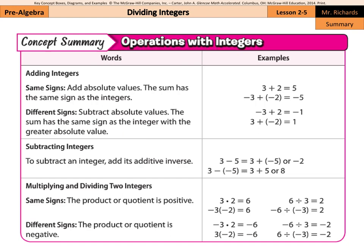This lesson concludes with our concept summary for operations with integers. When adding integers with the same sign, just add the numbers — 3 plus 2 is 5, but when they're both negative, it stays negative. Different signs: subtract their absolute values, and the sum takes the sign of the integer with the greater absolute value, just like we did in the previous example. For subtracting integers, add its additive inverse — keep, change, opposite — and then follow the addition rules.